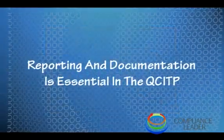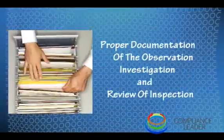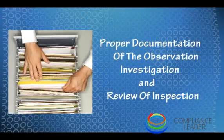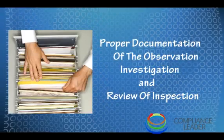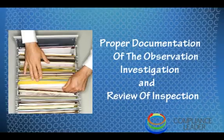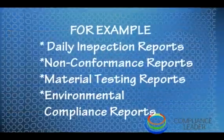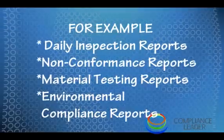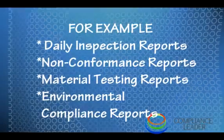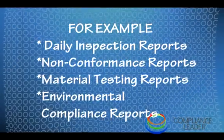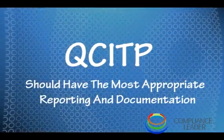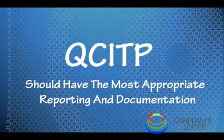Reporting and documentation is essential in the QCITP. Proper documentation of the observation, investigation, and review of inspection is mandatory in any quality management system. Similarly, there are numerous types of reports generated through inspection and testing — for example, daily inspection reports, non-conformance reports, material testing reports, environmental compliance reports, and many more. Hence, depending on the complexity of the project, the QCITP should have the most appropriate reporting and documentation so that any confusion or ambiguity can be minimized.